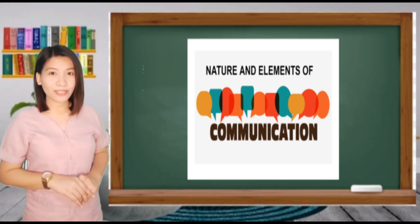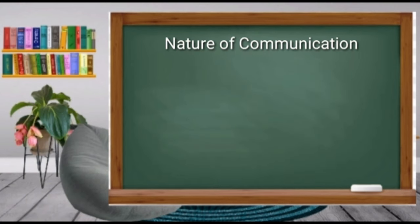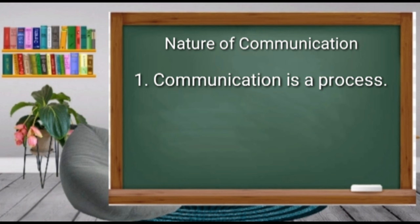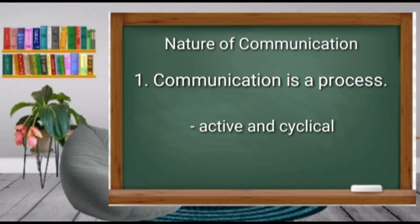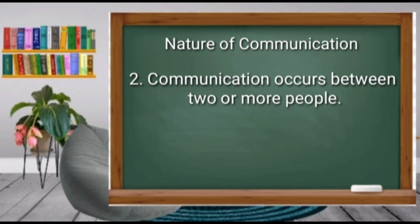Let's start with its nature. Number 1: Communication is a process. It may be seen as a flow of information. This simply means that communication among people is active and cyclical. It begins from one step, then to another step. Number 2: Communication occurs between two or more people. The sender and the speaker take an active part.